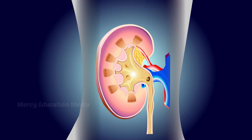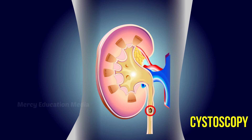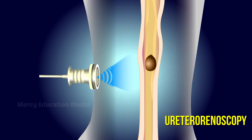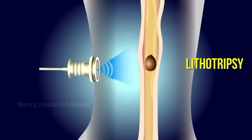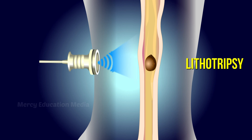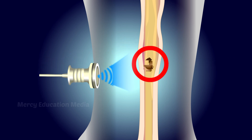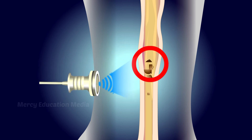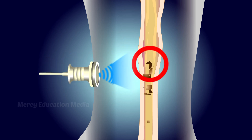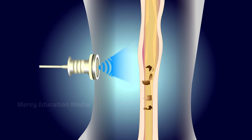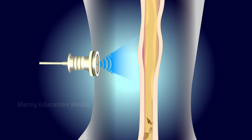Stones in the bladder and lower ureter can be crushed and removed by cystoscopy or by ureterorenoscopy. The first line of treatment is lithotripsy, which disintegrates stones by focusing shock waves on them from outside the body.